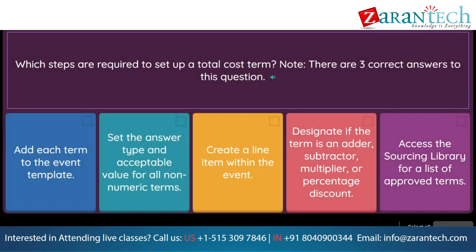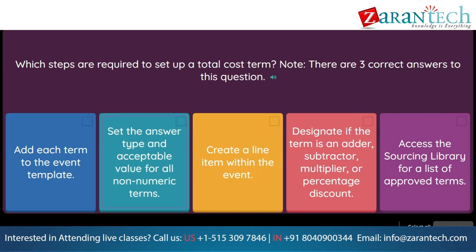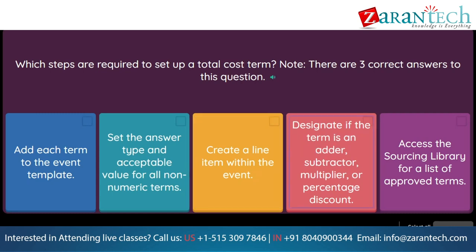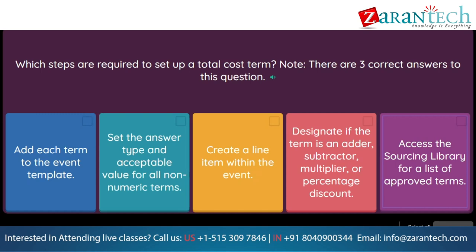Question: Which steps are required to set up a total cost term? Note, there are three correct answers to this question. Option 1: add each term to the event template. Option 2: set the answer type and acceptable value for all non-numeric terms. Option 3: create a line item within the event. Option 4: designate if the term is an adder, subtractor, multiplier, or percentage discount. Option 5: access the sourcing library for a list of approved terms.